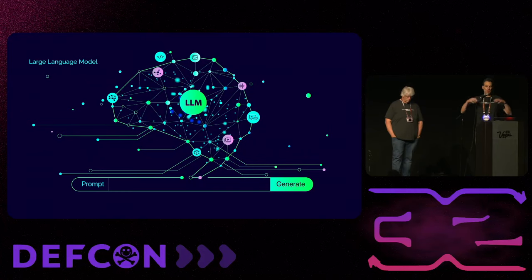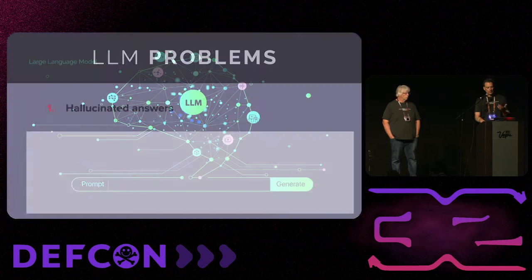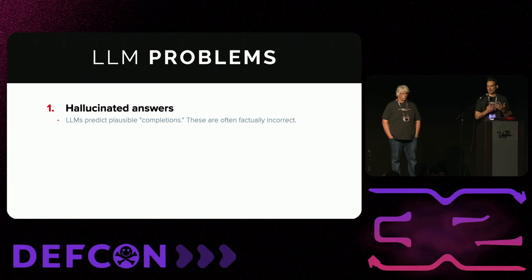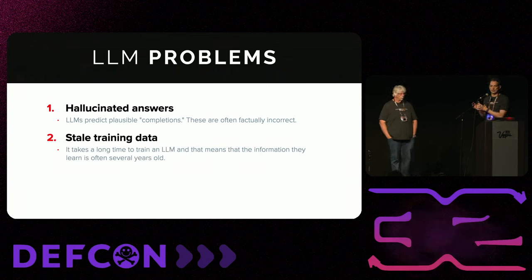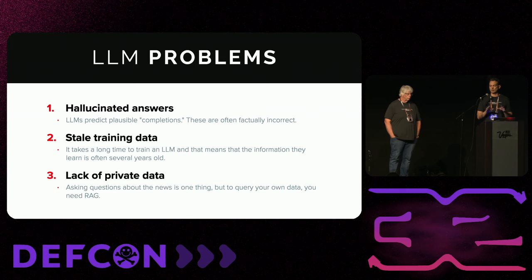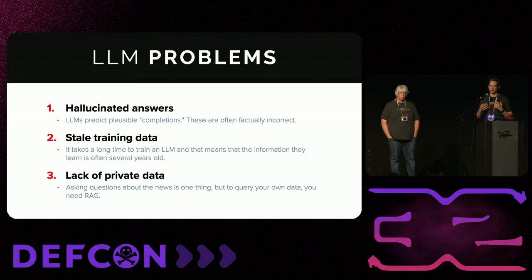This talk is about the ecosystems around LLMs, but we'll start by talking about LLMs specifically — and in particular, some limitations. When an LLM is trained, it's trained to predict a plausible completion to a prompt, which means it can sometimes make stuff up that sounds good but isn't necessarily right. It's also trained on what is typically stale data by the time it's released, and it hopefully hasn't been trained on your data — so if you want to do things across your corporate or personal data, it's not going to work.